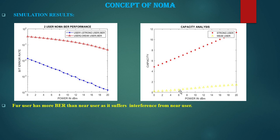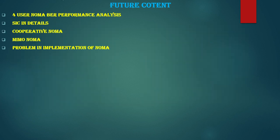Here you can also see the power versus capacity plot for the two users. In some other playlist I will show you how to calculate or simulate these graphs in MATLAB. For future content I will also cover four-user NOMA, bit-rate performance for four-user NOMA, how to do power allocation, and how this power allocation plays a critical role for the SIC calculation.